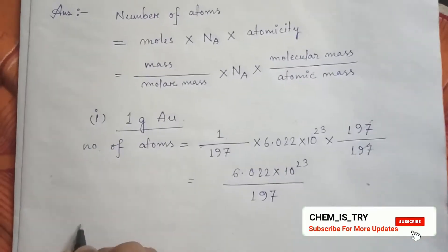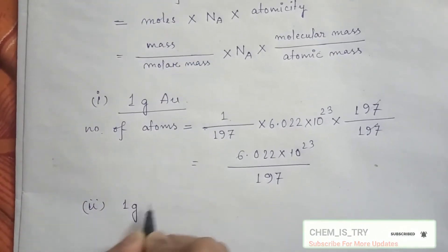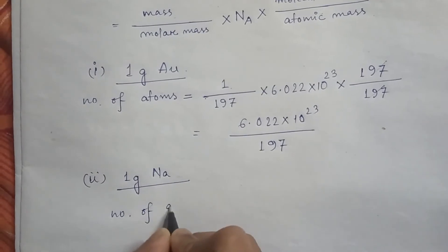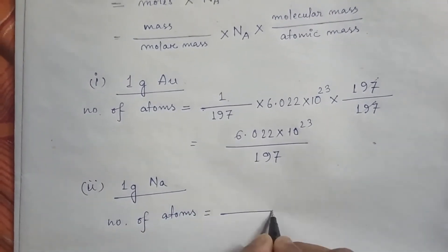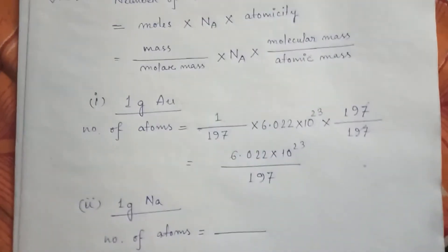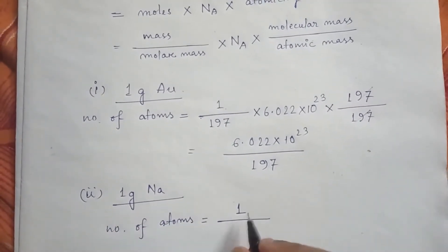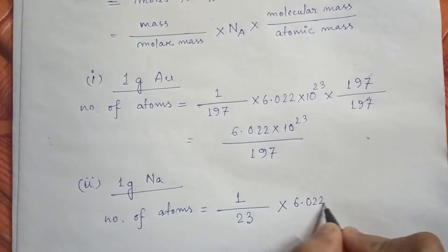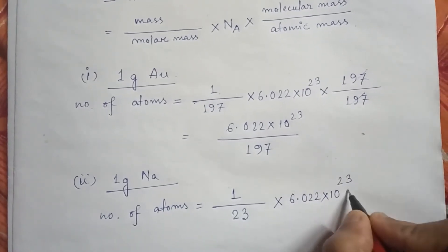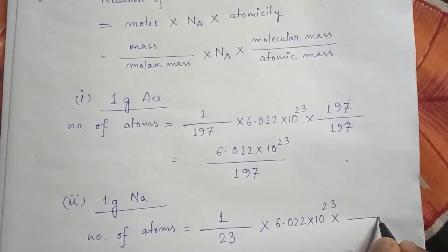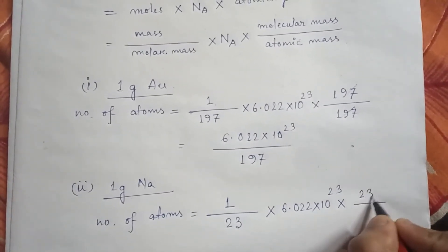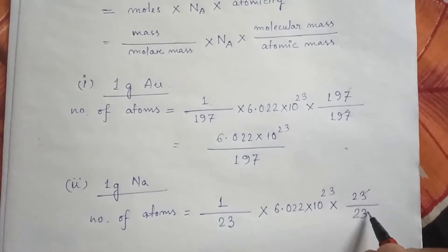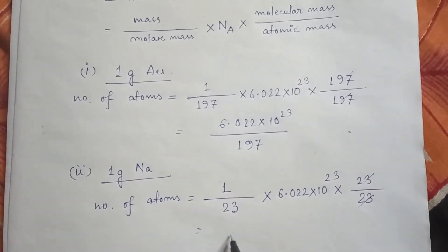Now come to the next option — one gram of sodium (Na). Number of atoms = (mass ÷ molar mass) × Avogadro number × atomicity. Mass is 1g, molar mass of sodium is 23. Molecular mass and atomic mass are both 23 since only one sodium atom is present, so atomicity = 23 ÷ 23 = 1. The answer is 6.022 × 10²³ ÷ 23.